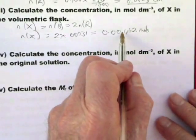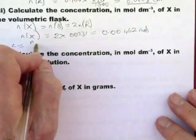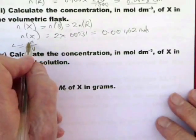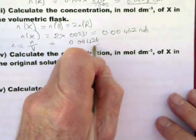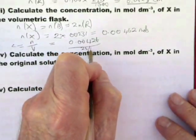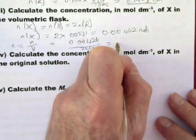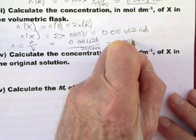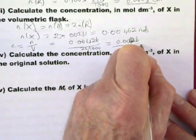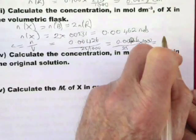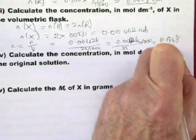So that's the number of moles of X in the 25 cm cubed solution. And we go back to the C equals N over V. We know the number of moles, and we know the volume. So that equals 0.00462 divided by, in this case, 25 divided by 1,000. 1,000 for the same reason as before we used 1,000. So that equals 0.00462 divided by 25 multiplied by 1,000. And that equals 0.1848 moles per decimetre cubed.